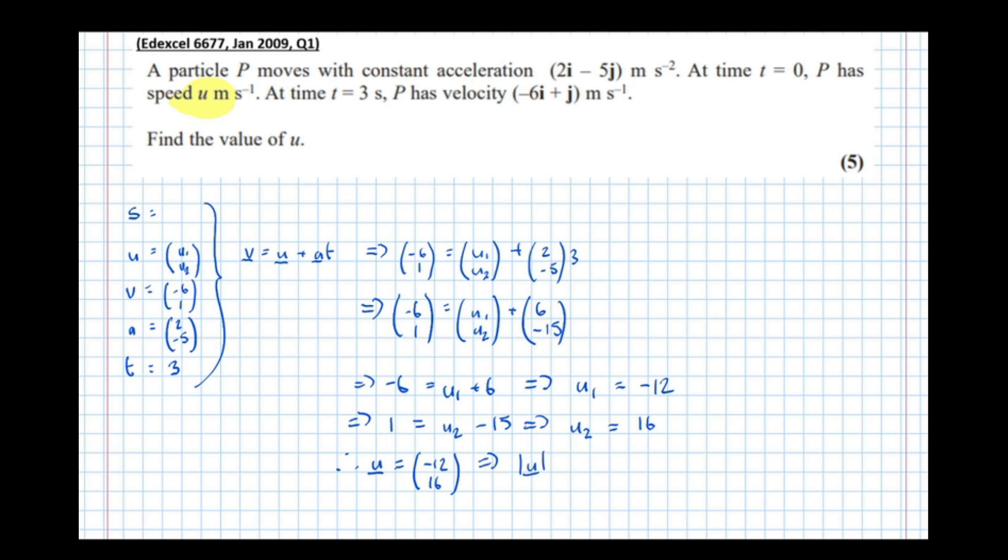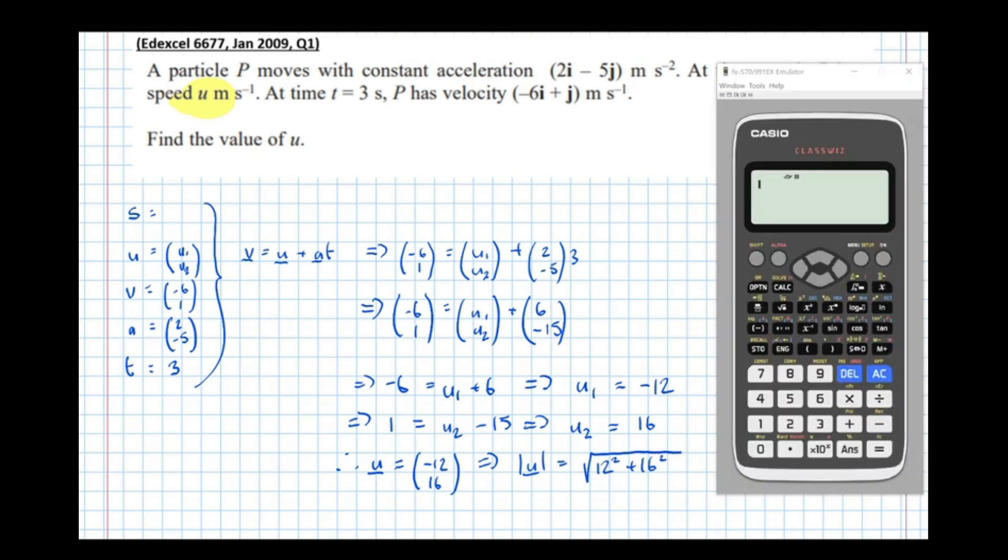The speed of the particle is the length of that, which equals the square root of 12² + 16². Notice I didn't write -12 squared—when we square a negative number it becomes positive.